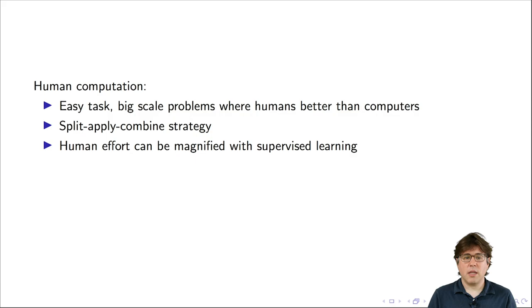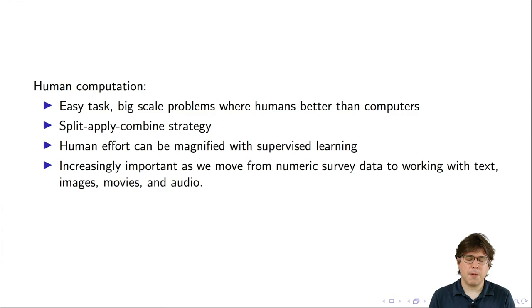In these human computation tasks, the effort of the humans can often be magnified with supervised learning. Finally, this is an increasingly important type of project as social researchers move from working more with numeric survey data to working with text, images, movies, and audio. These newer forms of data are still a little bit harder for computers to analyze. So this is an area where I think we'll see more human computation projects. This may all seem a little abstract now, and I'm going to give you two examples that help illustrate what kinds of things are possible.